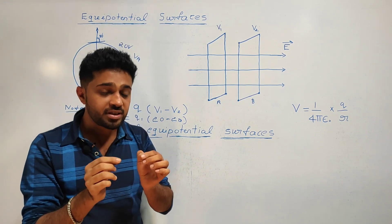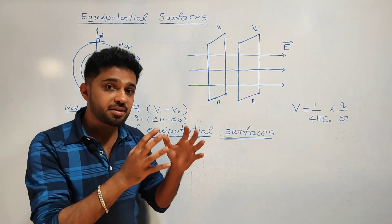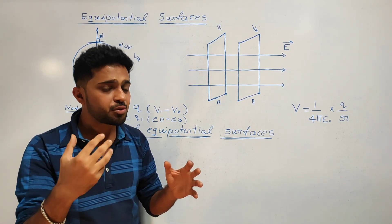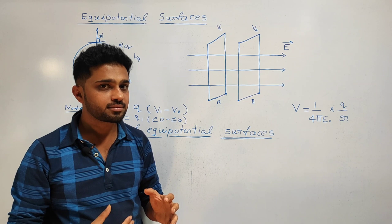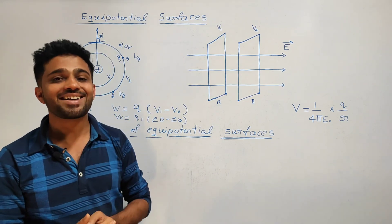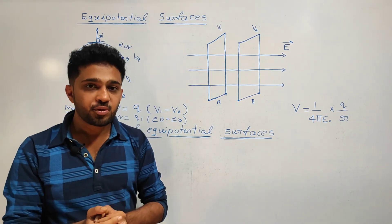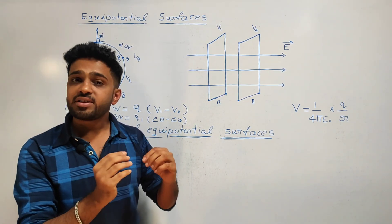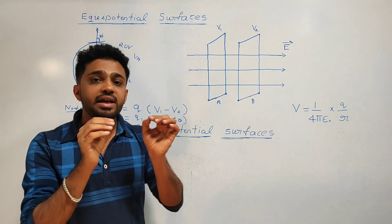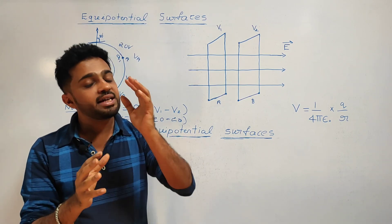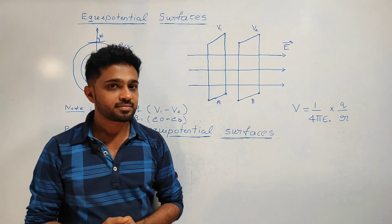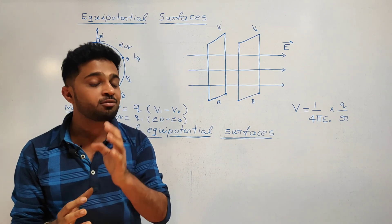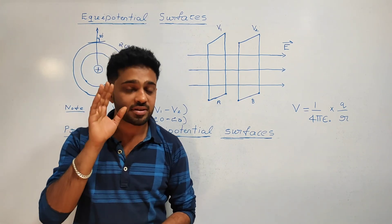The equipotential surfaces will not intersect each other — that is a property of equipotential surfaces. Equipotential surfaces never intersect each other. So these are the properties of equipotential surfaces.